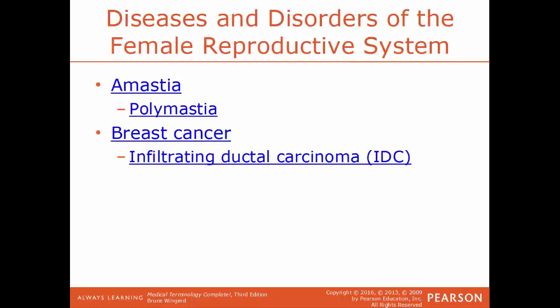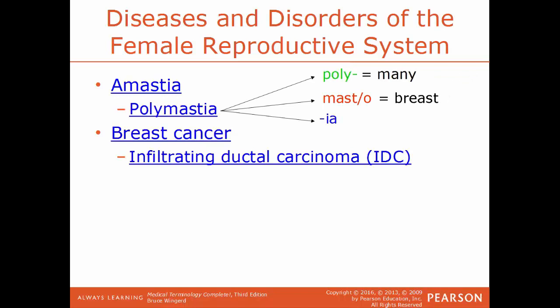Now we'll talk about some specific diseases and disorders of the female system. Amastia is a condition where the breast tissue, nipple, and areola are absent. At the other extreme is polymastia — poly means many, masto means breast, ia is a condition of — so this is having more than two breasts present.